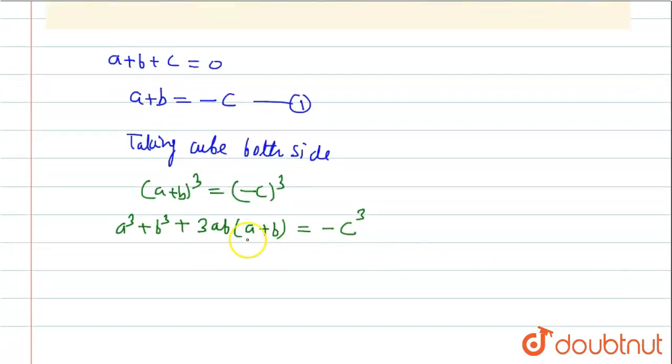Now a³ + b³ + 3ab. From equation first, value of a+b will be equal to -c.